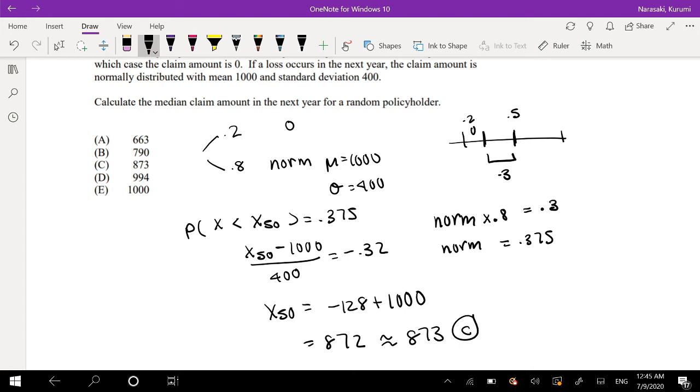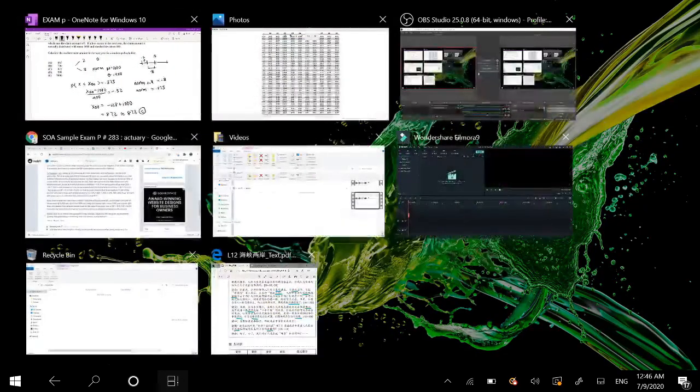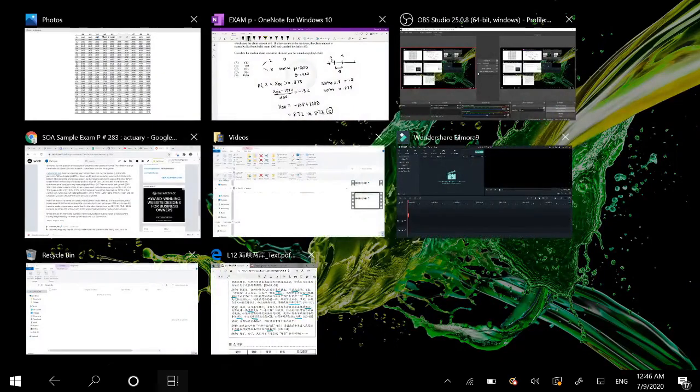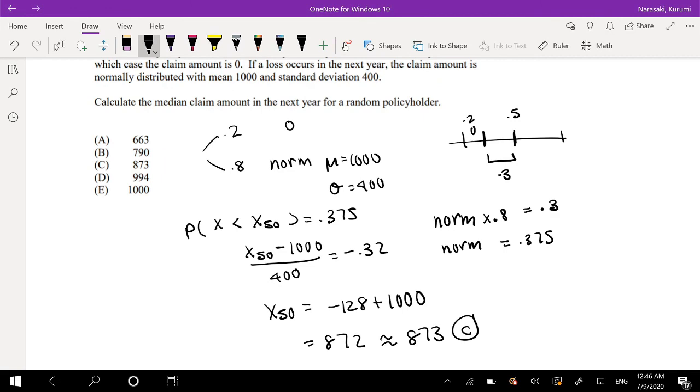Which is our answer C. So the discrepancy comes from when we took the normal distribution because, again, normal distribution is just an approximation of the integral. So some people might think the 0.375 is closer to this number instead of this number. So the z-table or normal table isn't exact, but it's a good approximation.